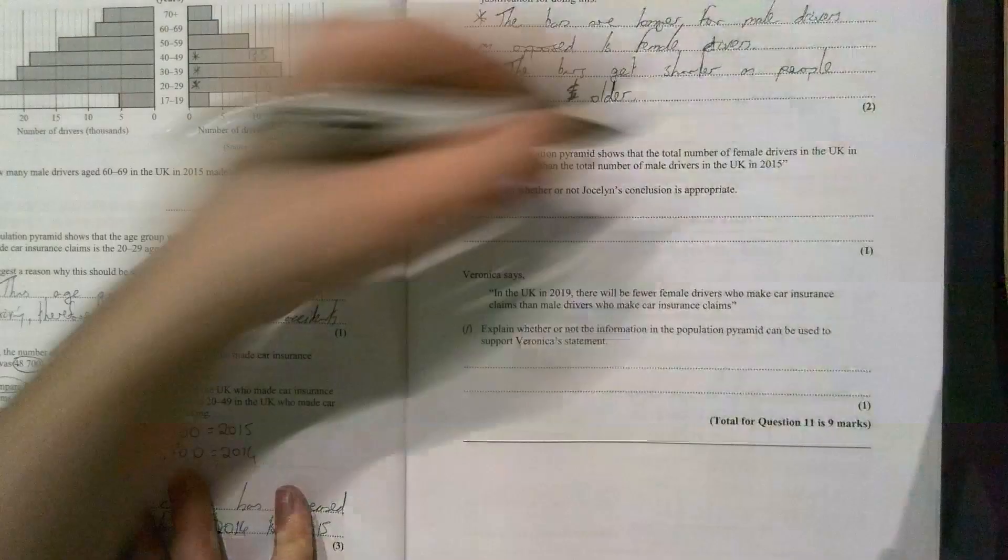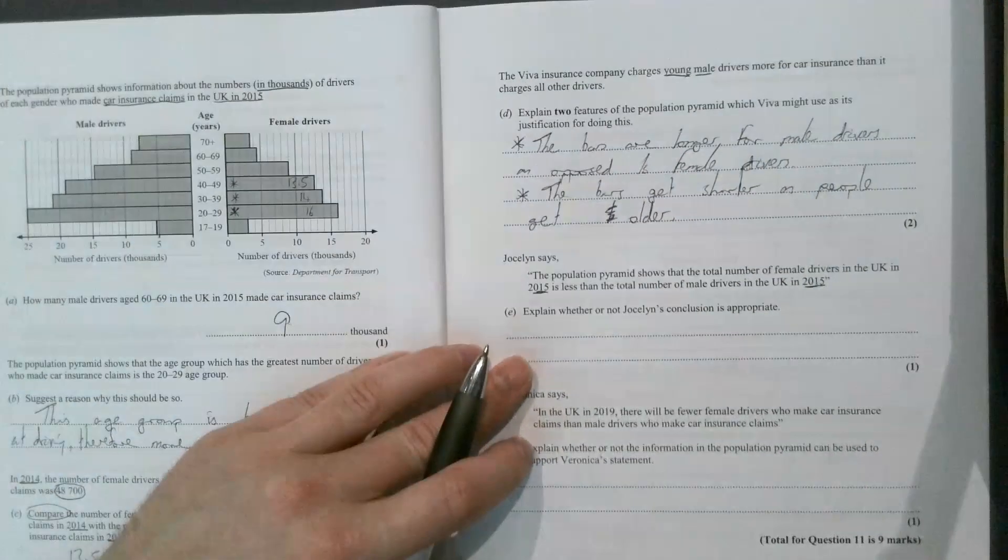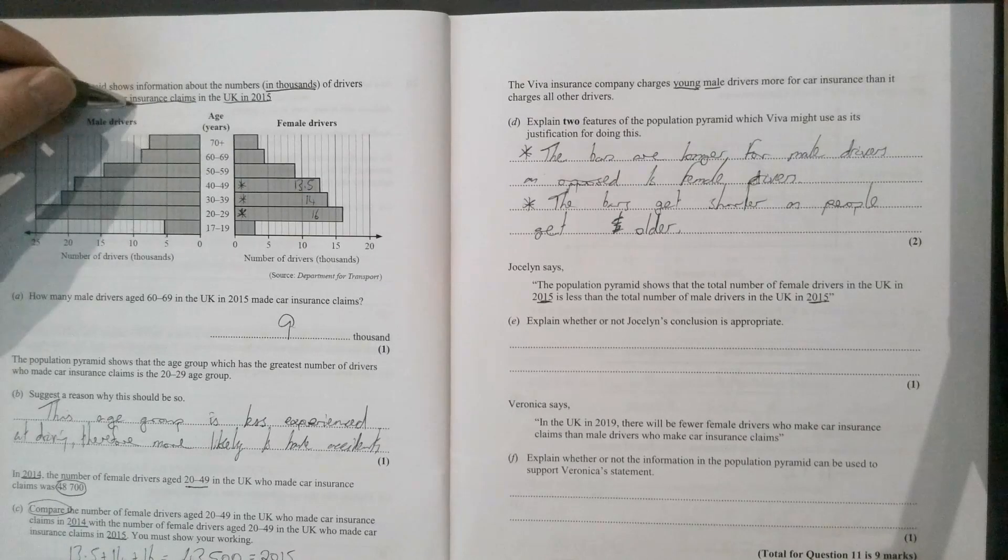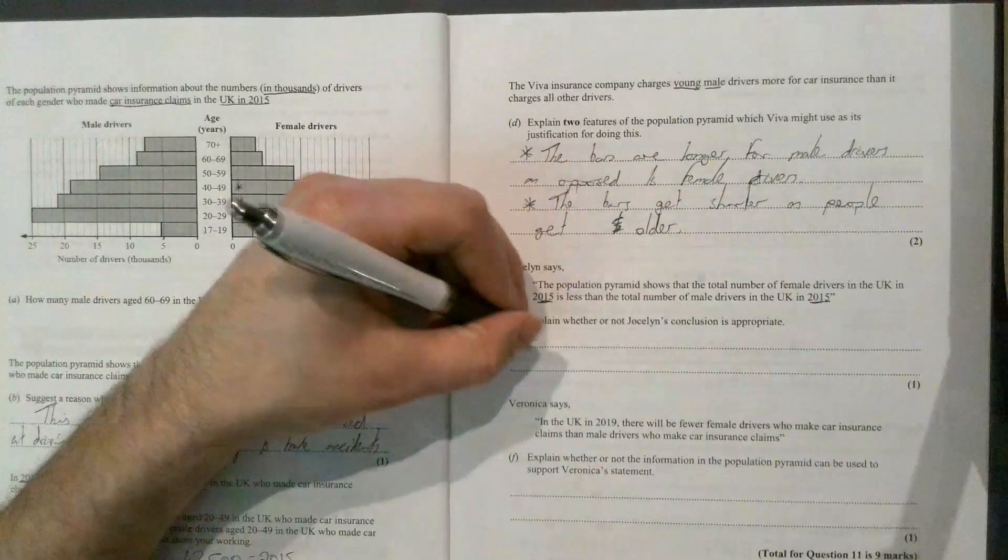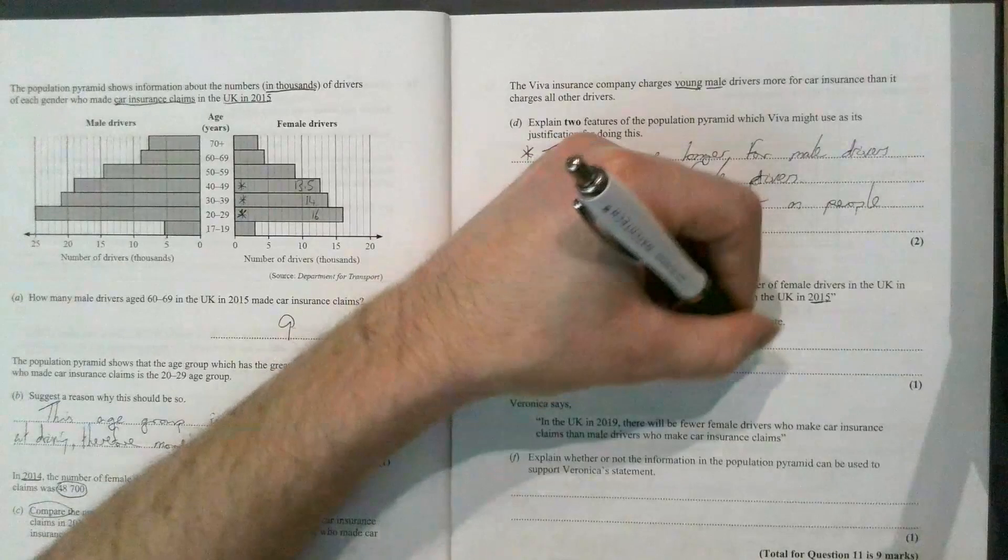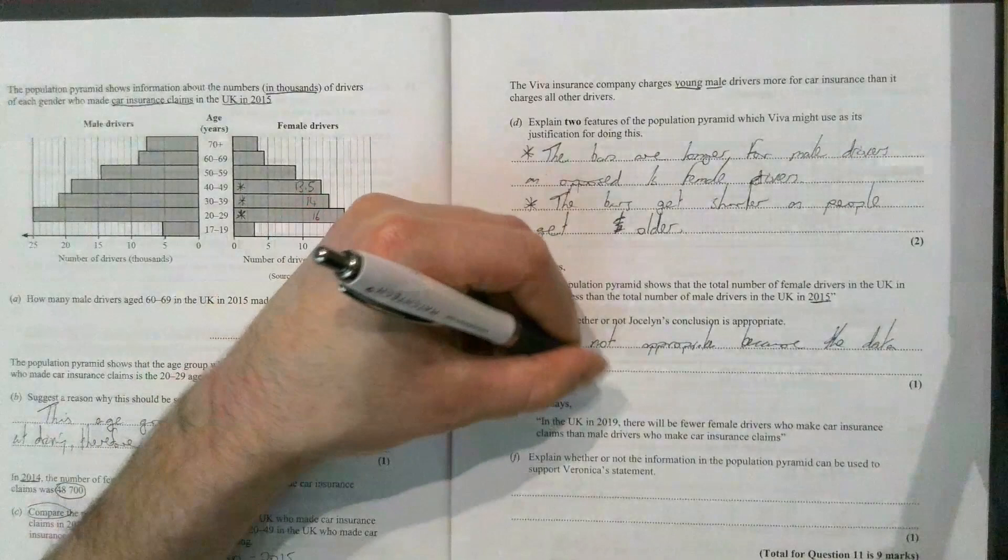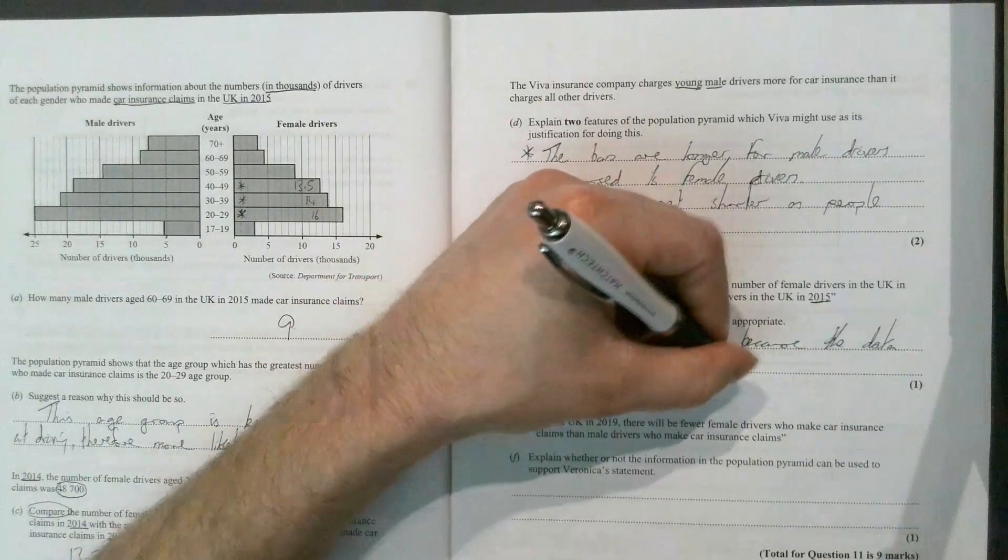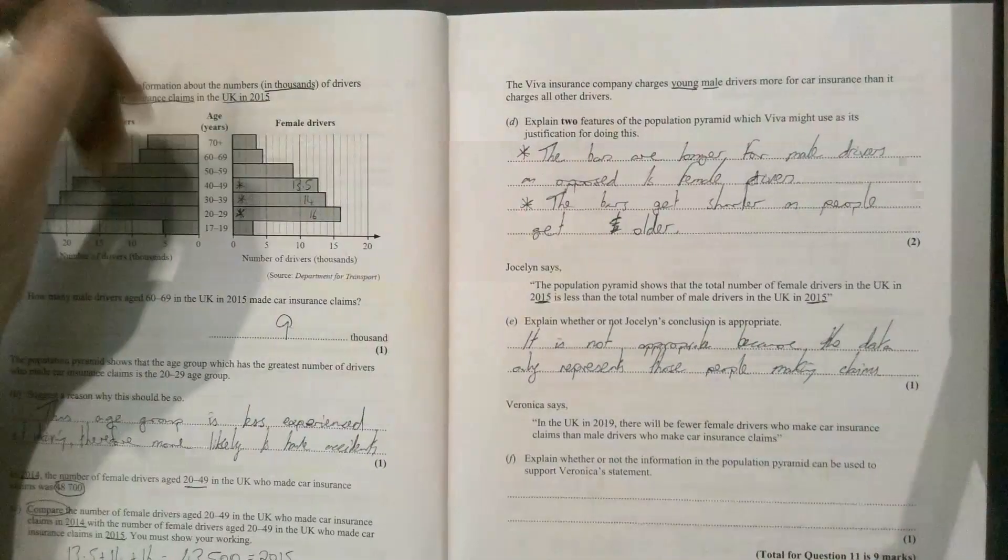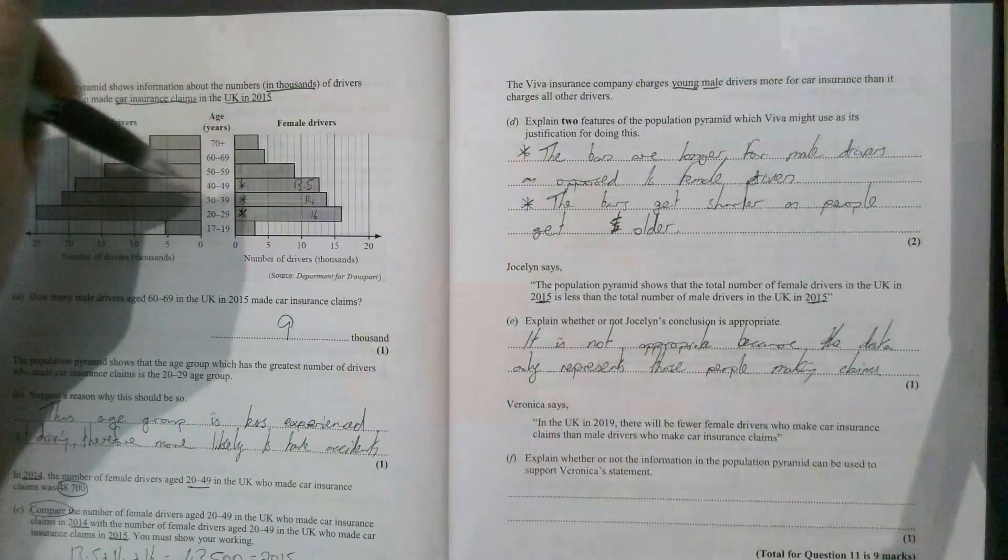This is almost to try and trick you, to see if you've understood what the data is telling you. If we remind ourselves, the data is about car insurance claims. So explain whether or not Jocelyn's conclusion is appropriate. It is not appropriate because the data only represents those people making claims. There could be a lot more people who don't make claims, so that would change the skew in terms of female drivers to male drivers. This only represents those making claims; it doesn't represent the total population of drivers.